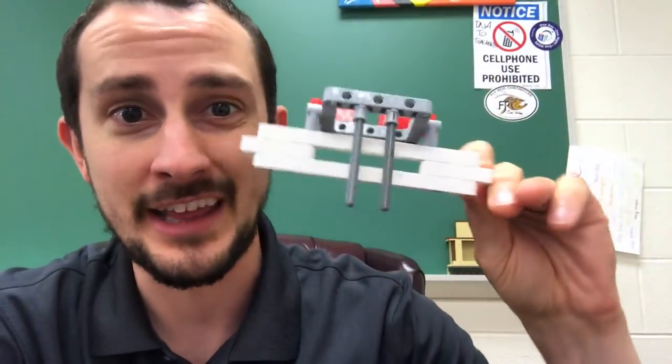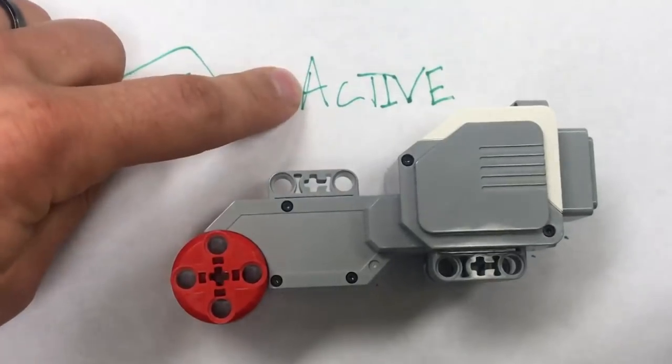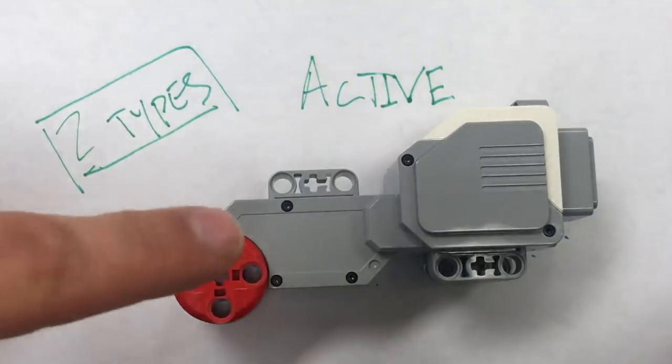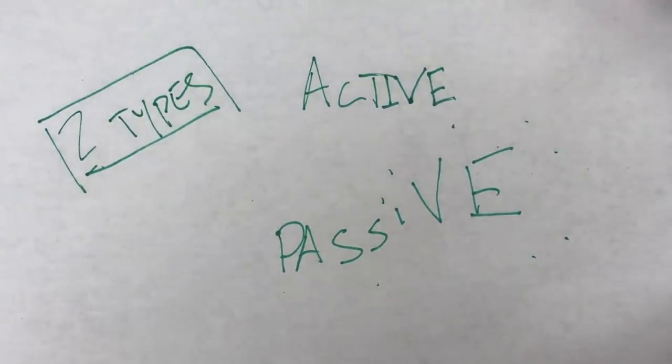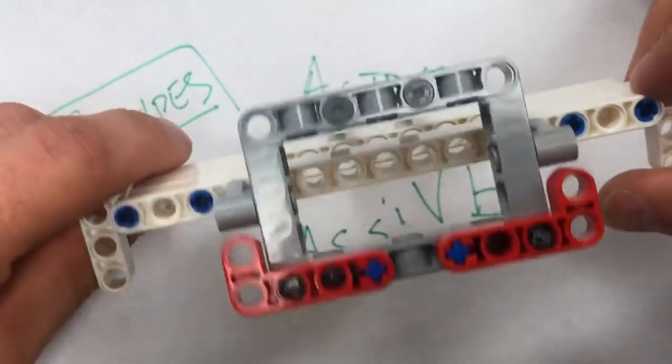Let's talk about some attachments. This is what we call a passive attachment. There are two types of attachments. One is active and that requires a motor. A motor is actively moving the attachment and then there's passive which doesn't require a motor. There's no motor involved whatsoever and that's what this is.